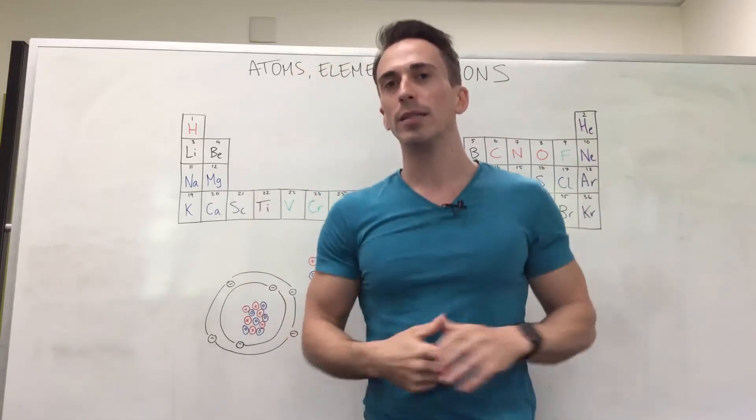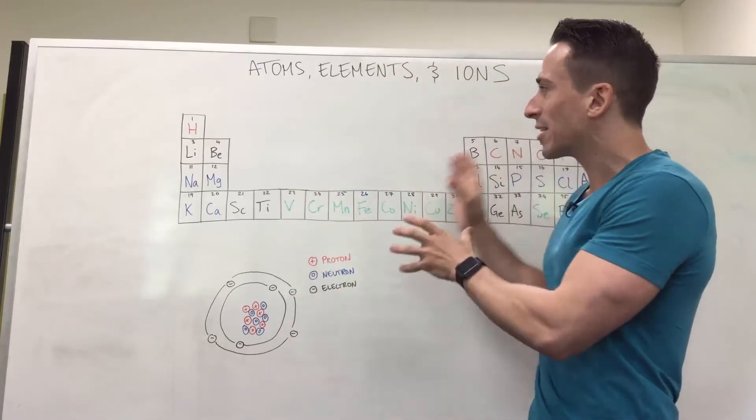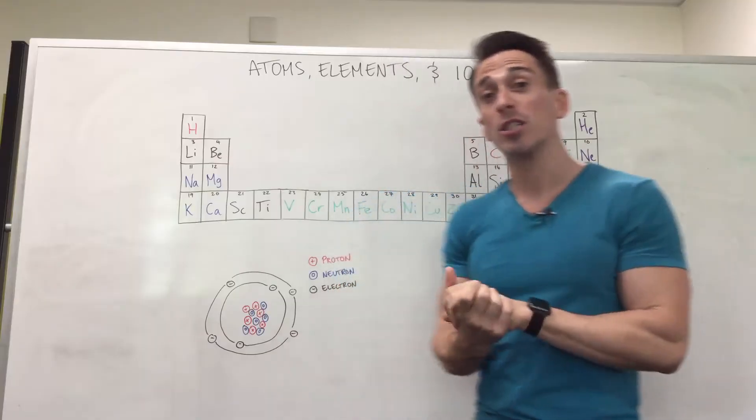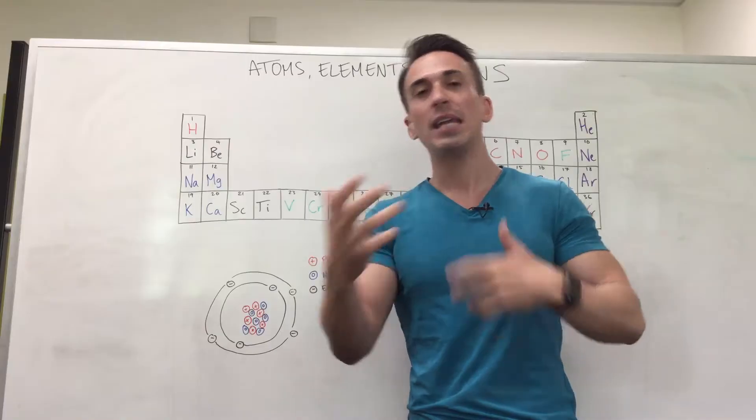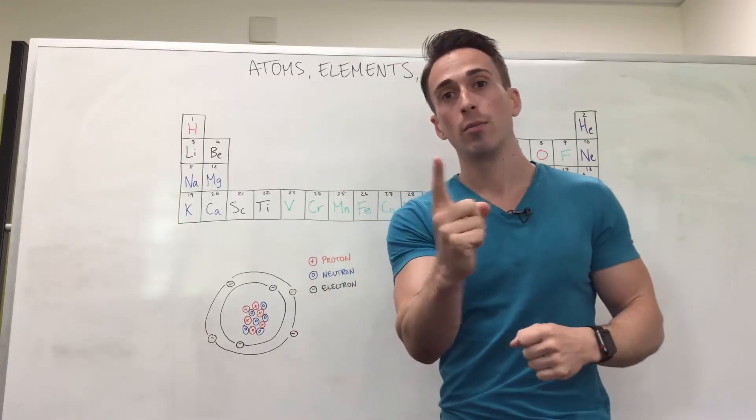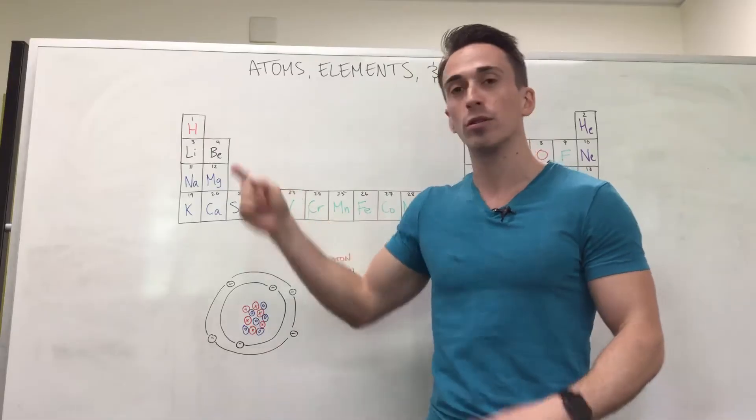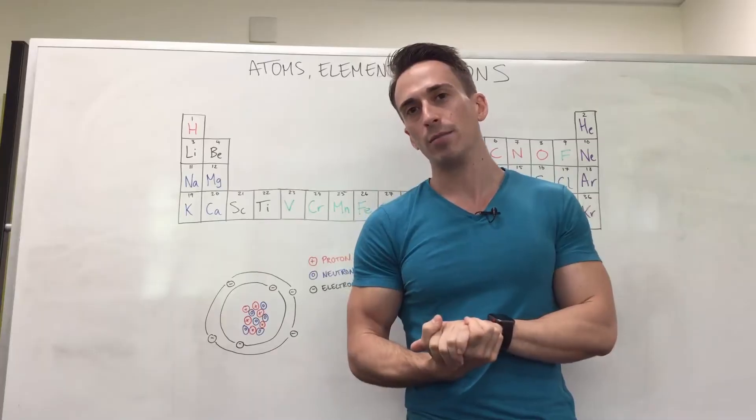Now when we look at an element, an element for example, is going to be a particular atom of a particular number of protons. So for example, like I just said, with carbon has six protons, well that's the element carbon. Any atom that has one proton is going to be hydrogen. Any atom that has four protons is going to be beryllium. So you can think of elements as the flavour of atoms.